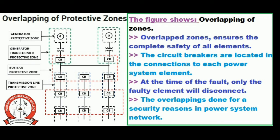Another failure condition is when the protective relay's settings are not properly configured, so it cannot sense the fault properly, leading to a failure of protection by the relay. In some other cases, there may be a loss of voltage and current supply to the relay, making the circuit breaker inoperative. Also, due to failure of the tripping circuit, there may be some fault in operation.